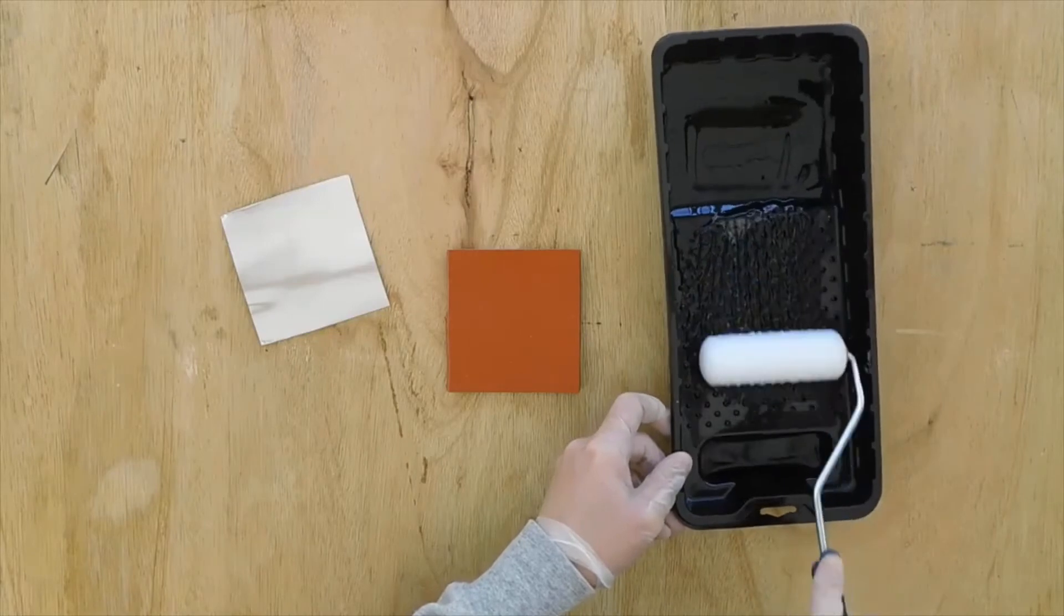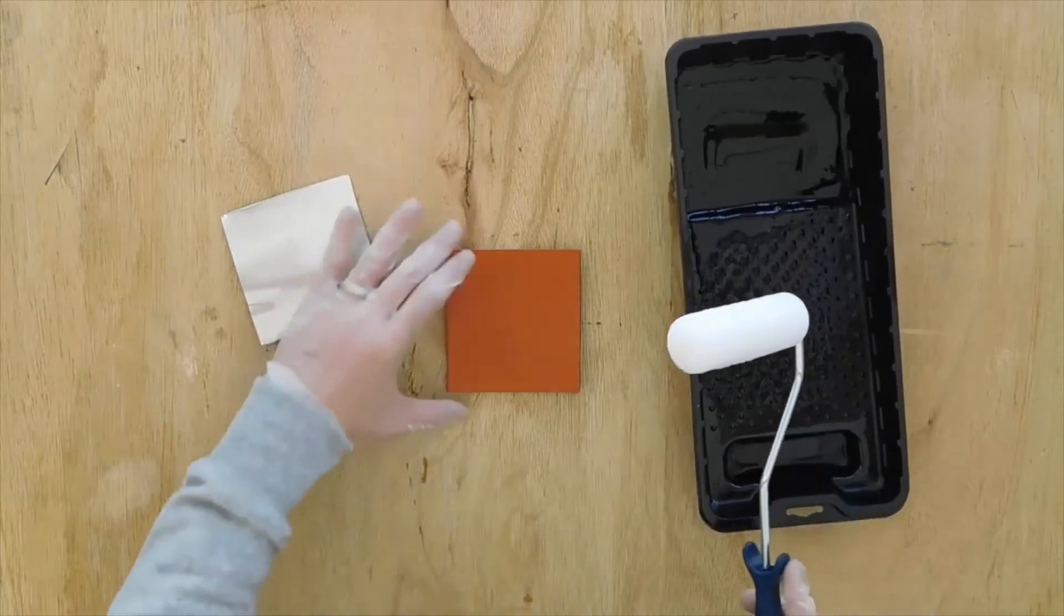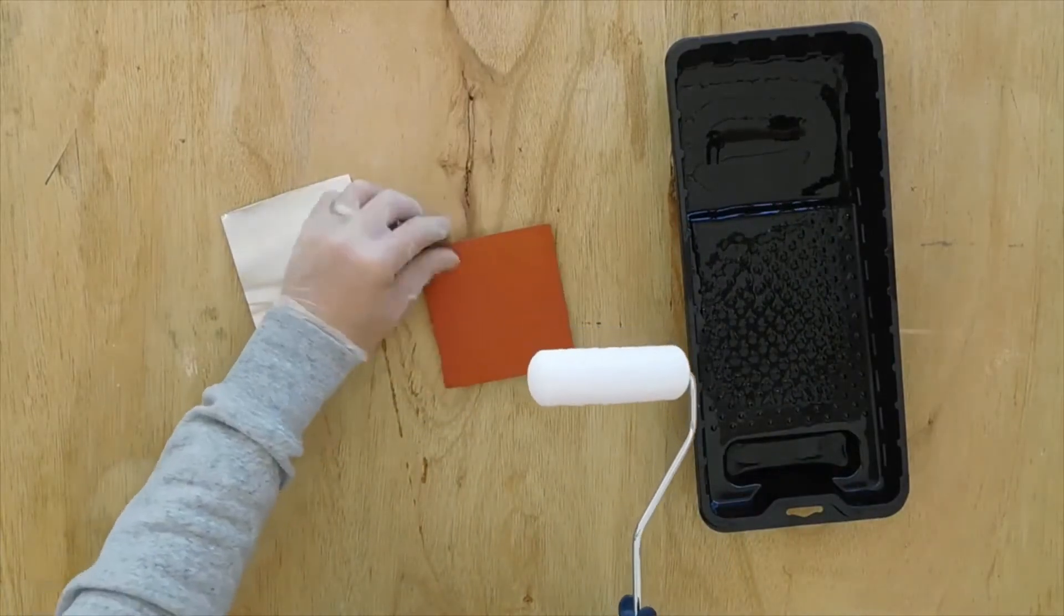Apply the adhesive to one of the two substrates to be bonded using your brush, roller, or coating device. Thinning, if required, may be done with toluene or paint thinner.